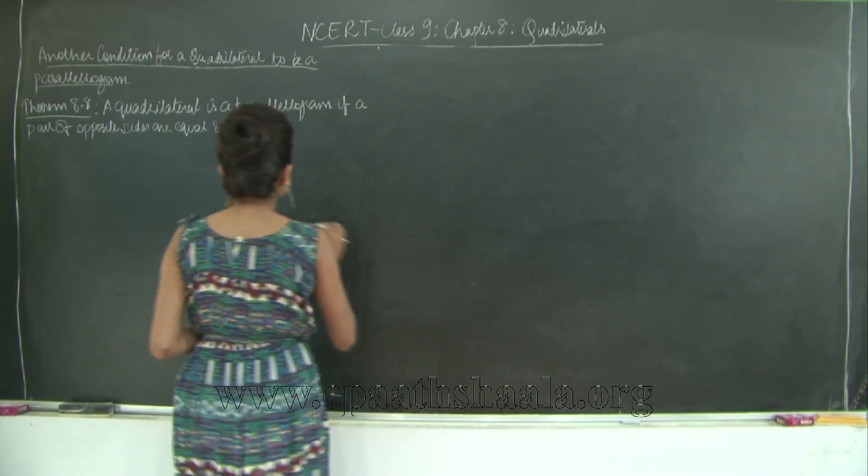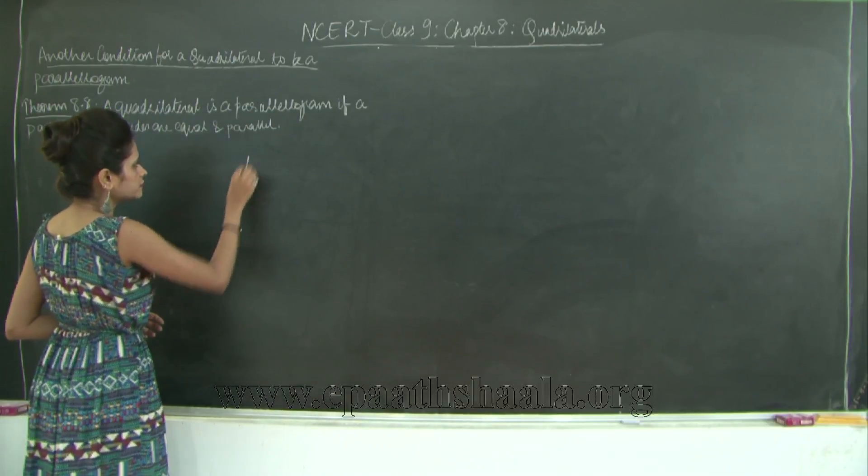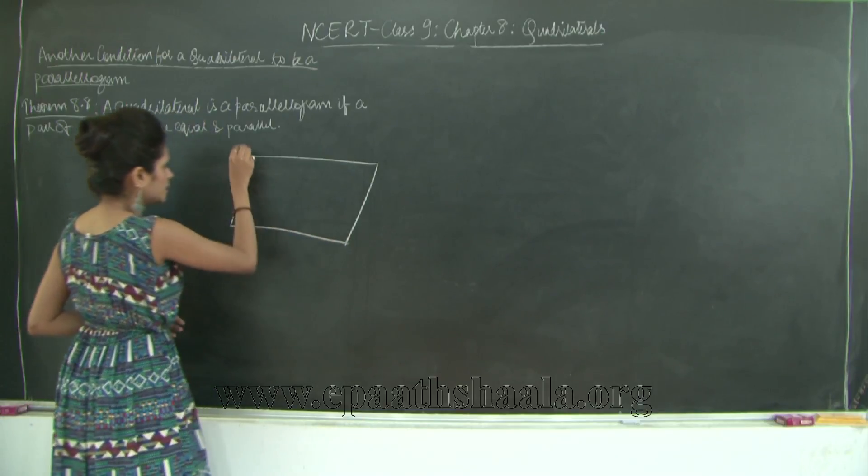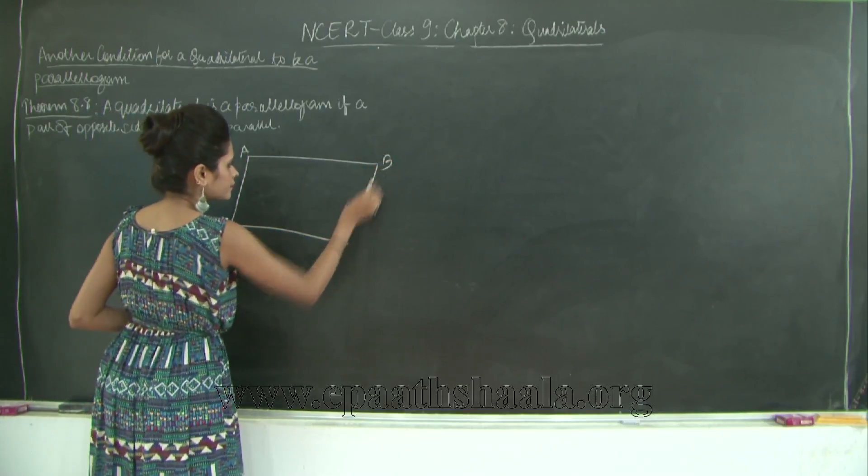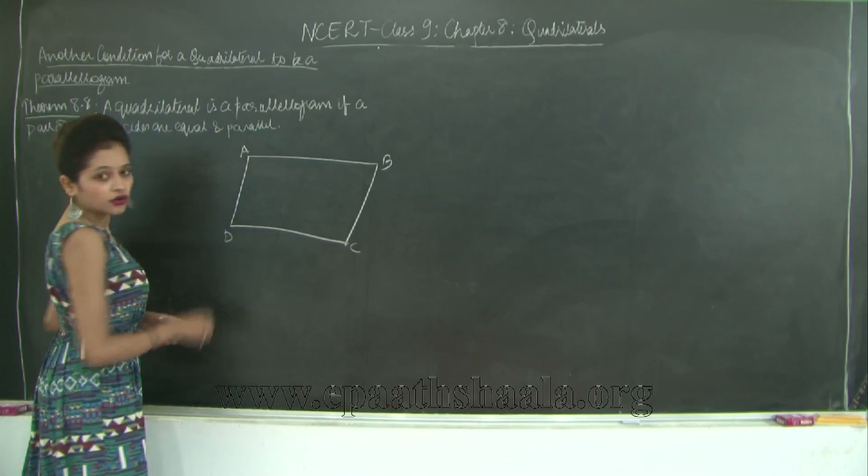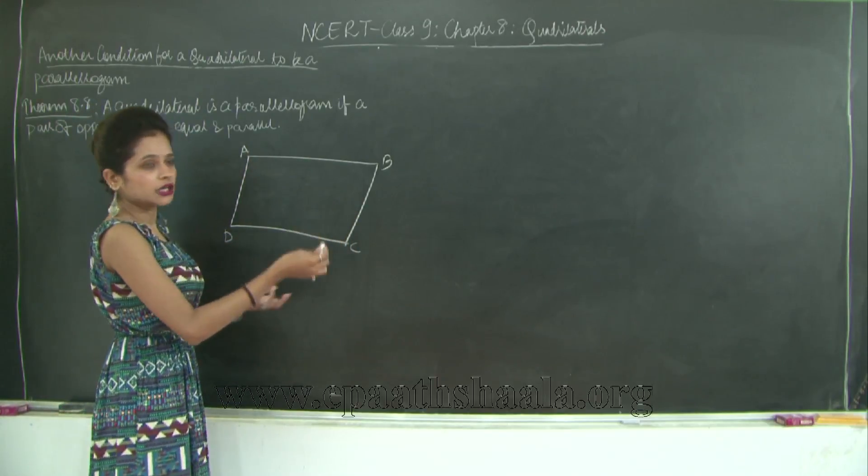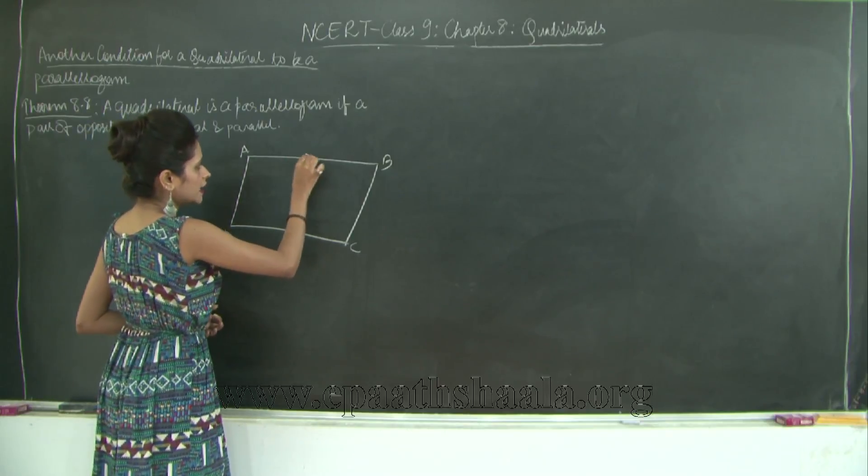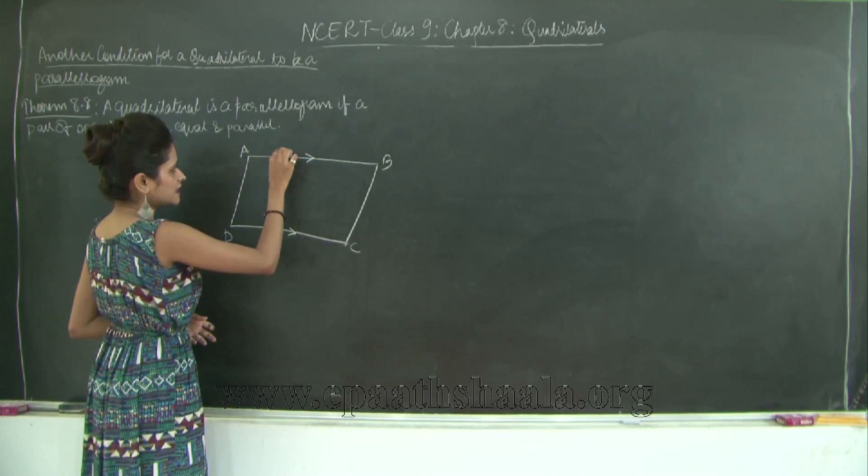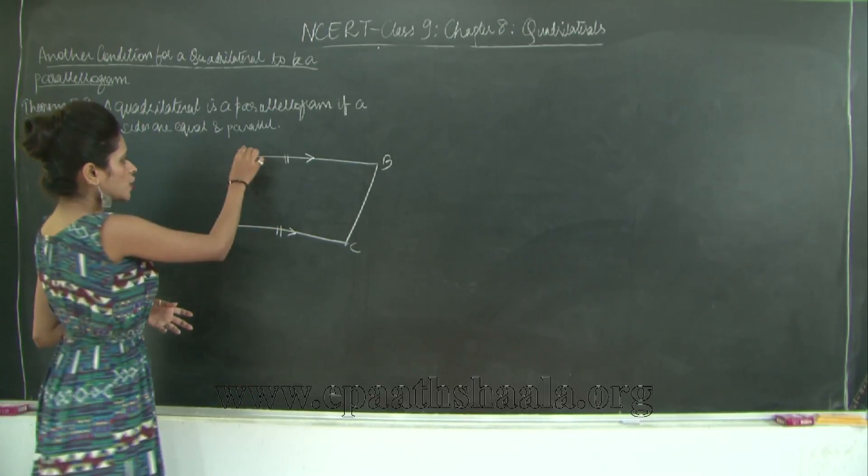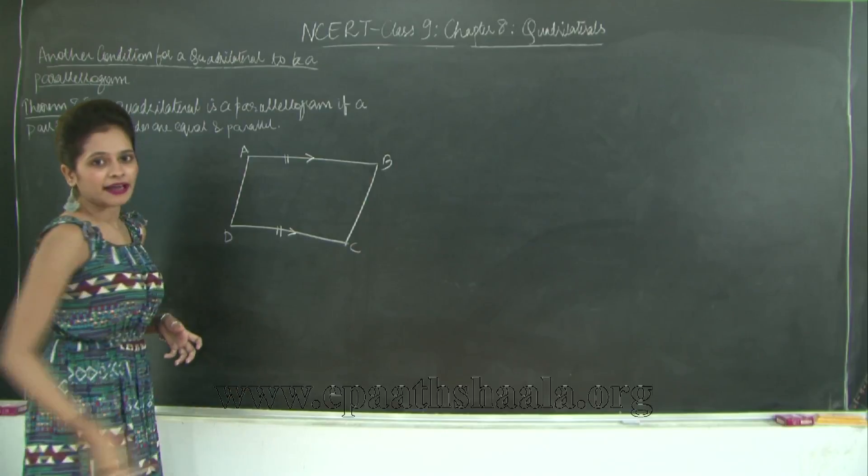What we will do is we will draw a quadrilateral ABCD. This is a quadrilateral in which let's say one pair of opposite sides are equal and parallel. So I will say AB is equal to DC as well as AB is parallel to DC. I need to prove that quadrilateral ABCD is a parallelogram.